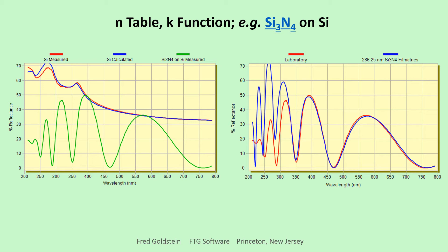Larger K would smear the wiggles. While the laboratory film has nearly the same N as filmetrics, it is considerably more absorbing.